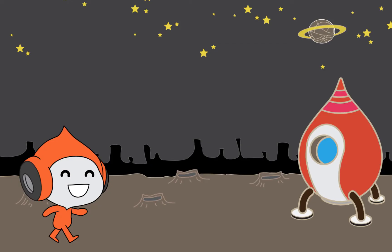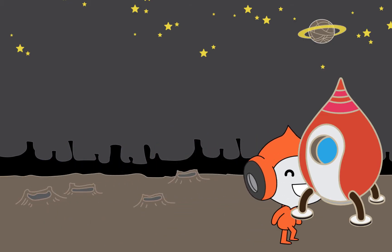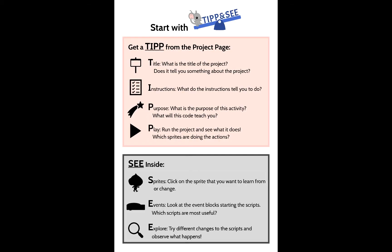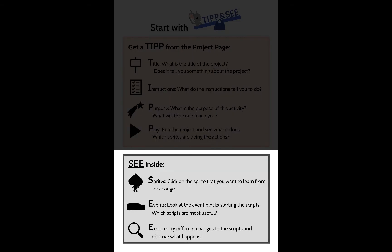This is a project that my team and I created. Tip and See helps me to get ready to learn from an existing project in two steps. Tip helps you get your head in the game, focusing yourself on the task and project at hand, and helps you observe what the example project does. See helps you find the code you want to explore in the project so that you can learn which code caused which program actions.